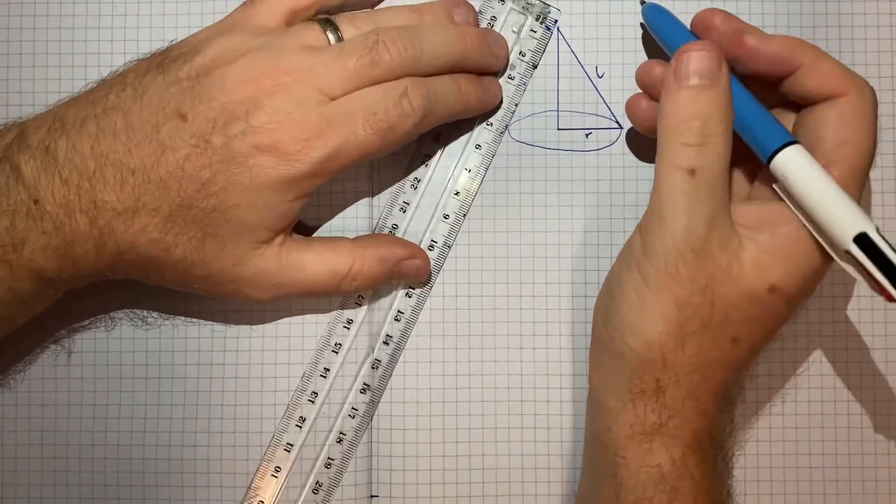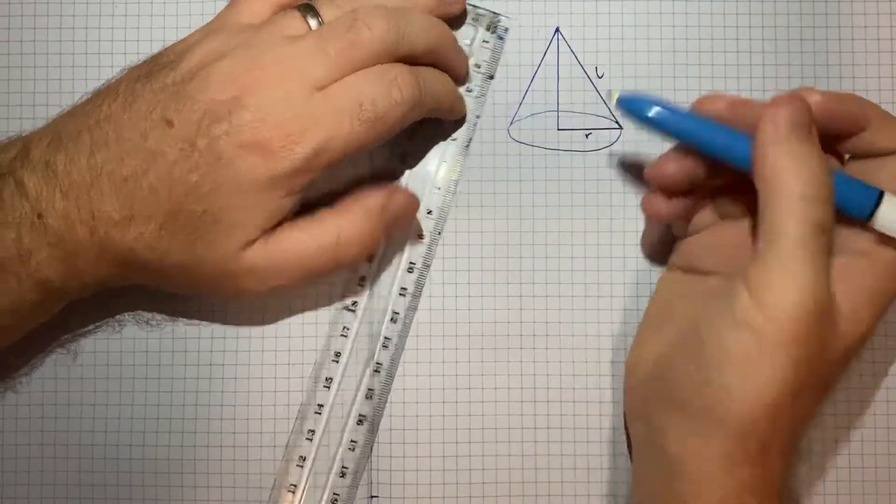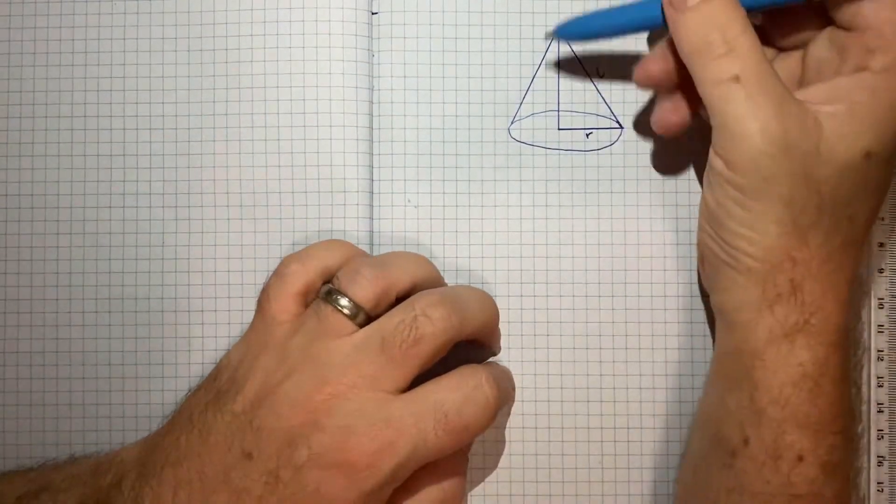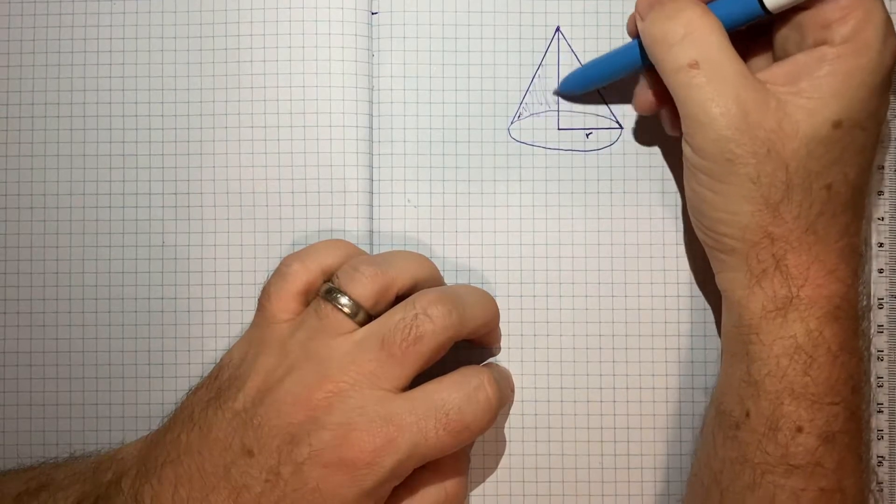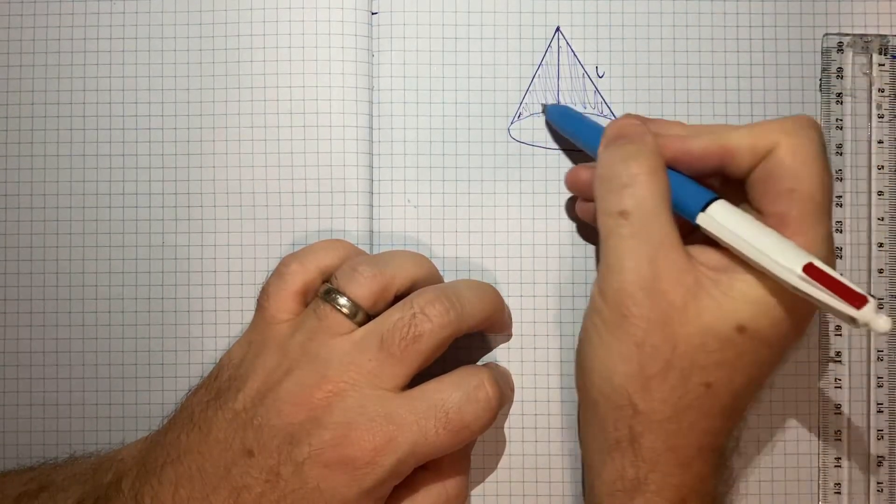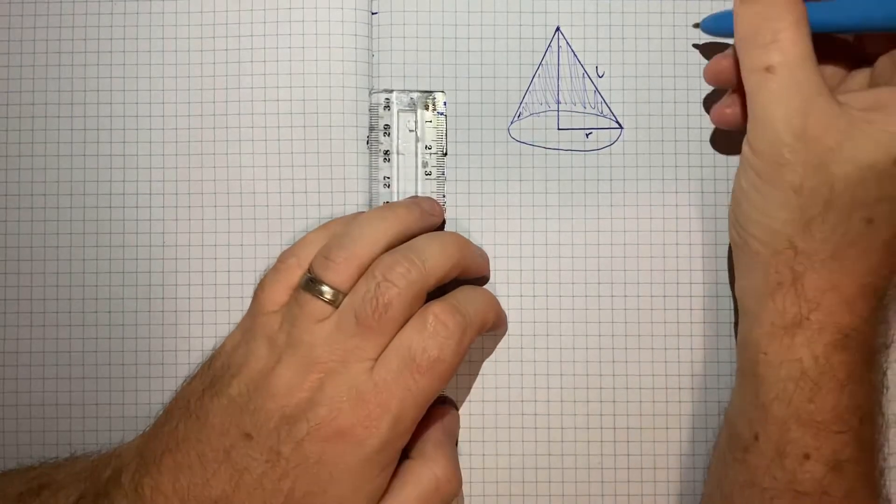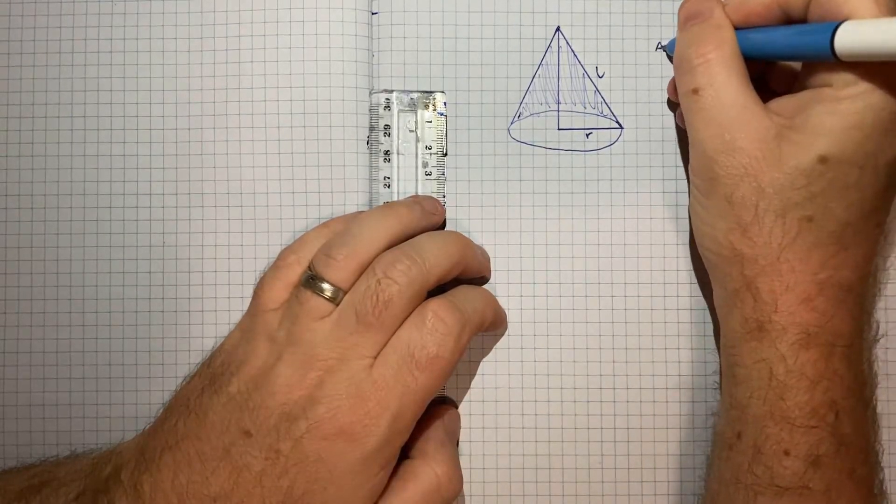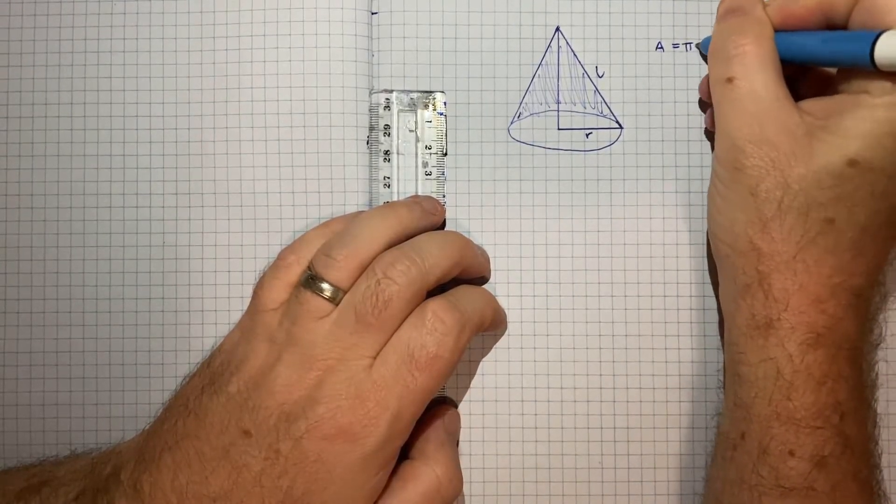So if I kind of complete the cone, we're concerned with the area of the outside of the cone not including the base, and we're being asked to show that that area A is equal to pi RL.